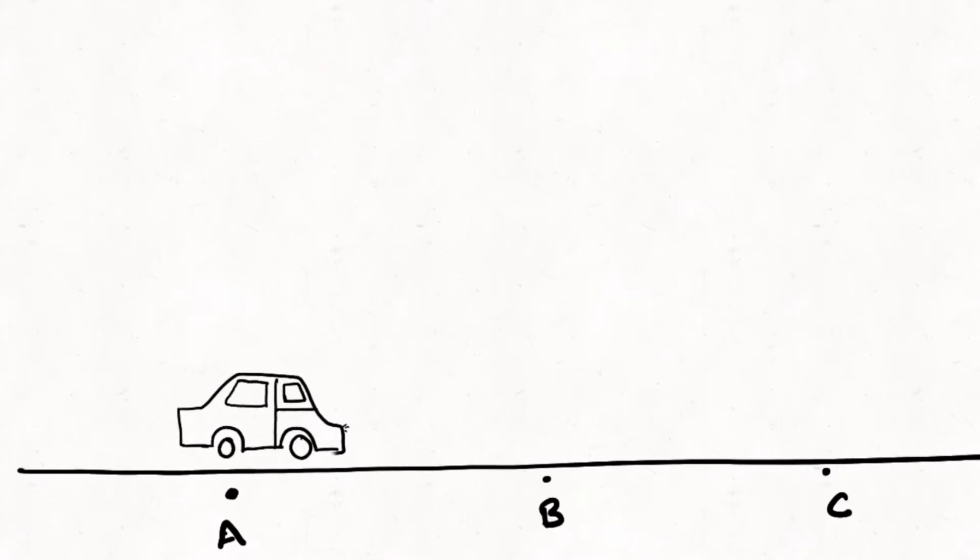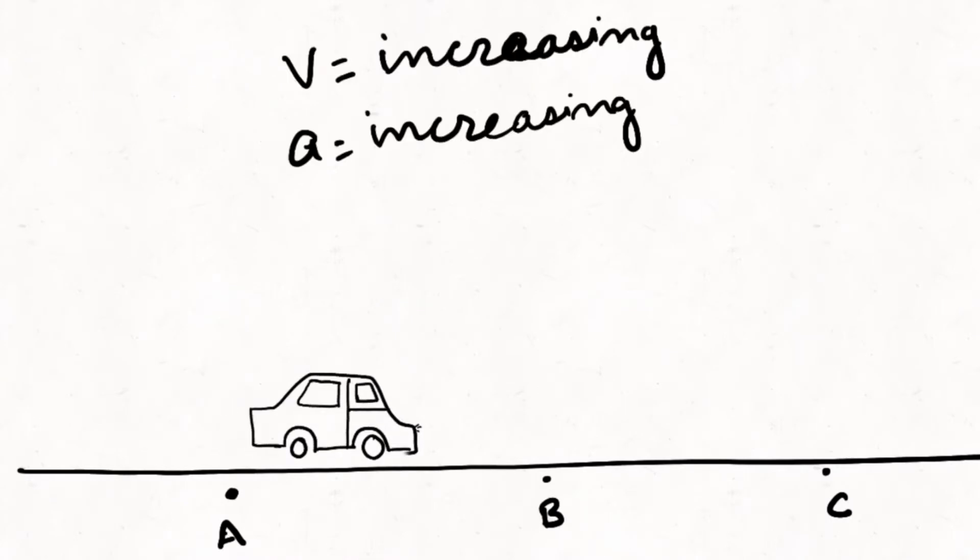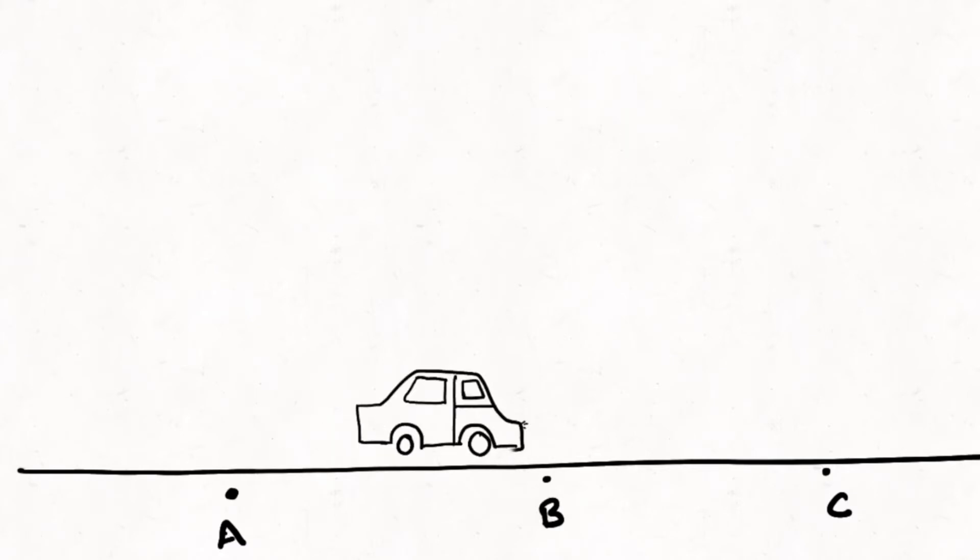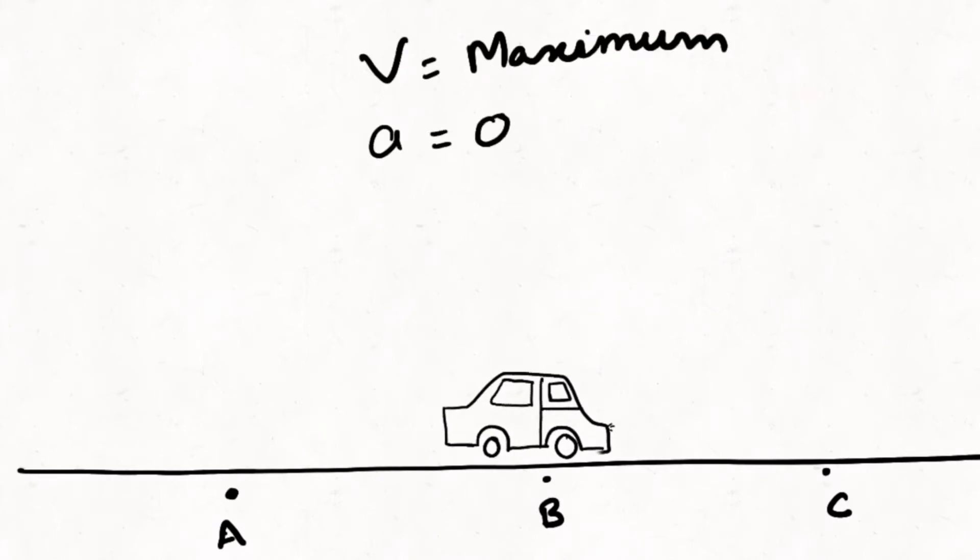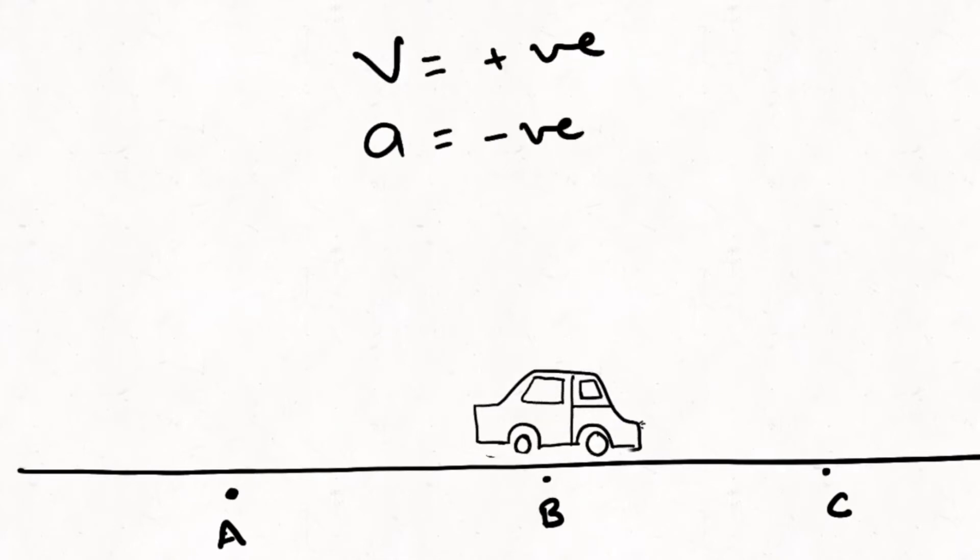As we go forward, both of them keep increasing, and at this point somewhere the acceleration kind of stops because it's sort of the midpoint. Here at the midpoint we get acceleration as zero and velocity maximum.